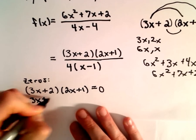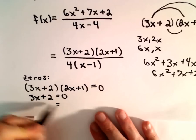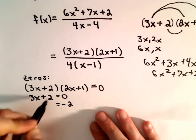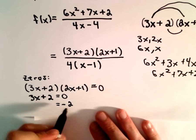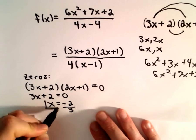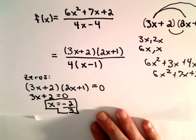So we have 3x + 2 = 0. We could subtract 2 from both sides, we would have 3x = -2, and then divide by 3 to get x = -2/3.